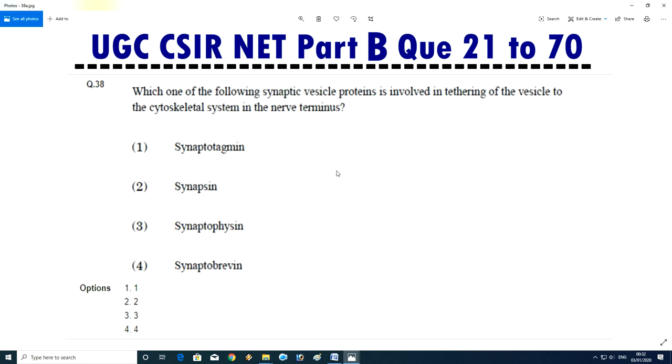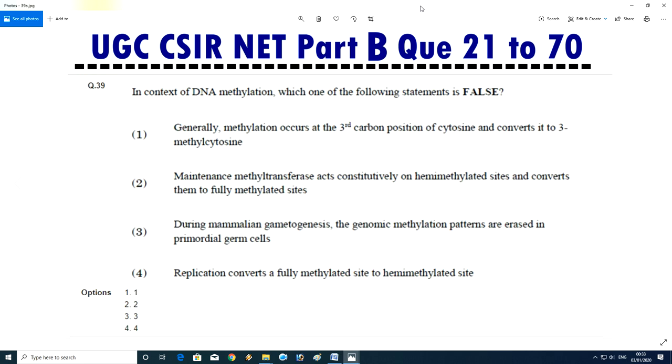Question No.39 - Which one of the following synaptic vesicle protein is involved in tethering of vesicle to cytoskeletal system in nerve terminus? Synaptic vesicle, synaptotagmin, synapsin, synaptophysin, or synaptobrevin. Answer is B, synapsin, means second.